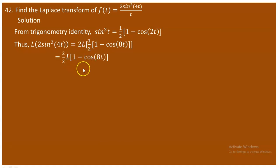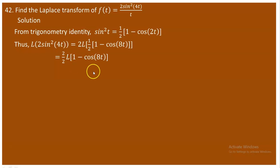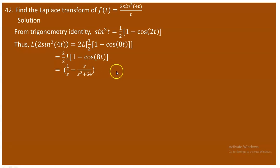We now need the Laplace of (1 - cos 8t). We know L{1} = 1/s and L{cos 8t} = s/(s² + 64). So the Laplace of the numerator is 1/s - s/(s² + 64).